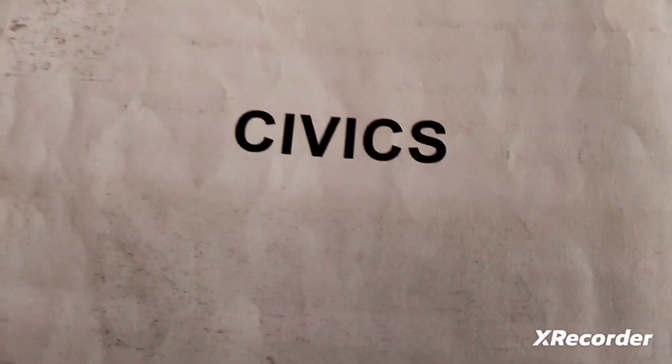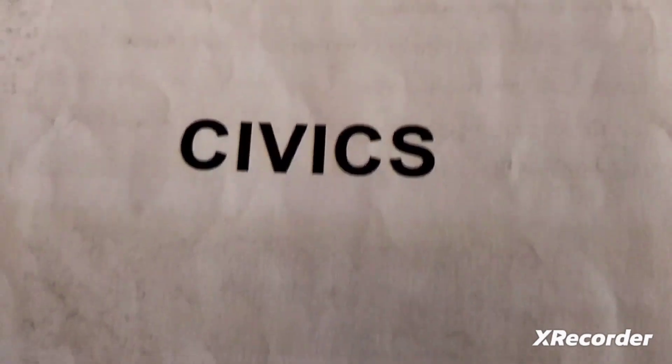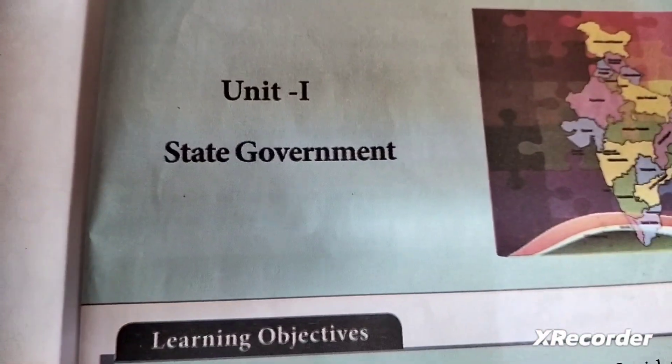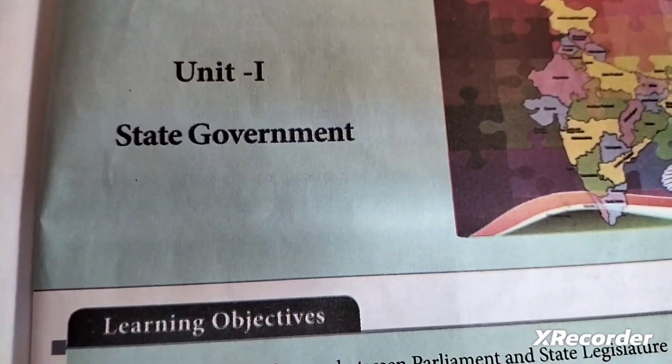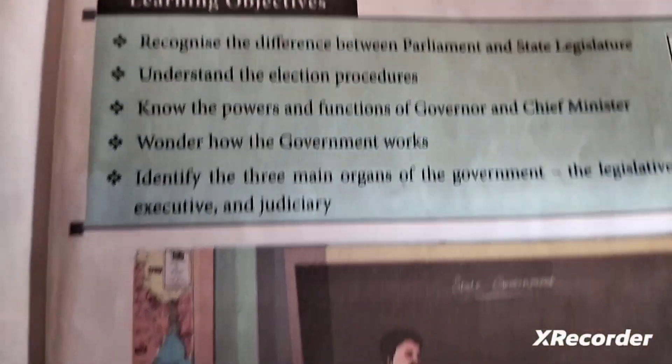Welcome students. In this video, we cover state government from the 7th standard social science book, Civics, Chapter 2. In this lesson, we will go through the book back answers.